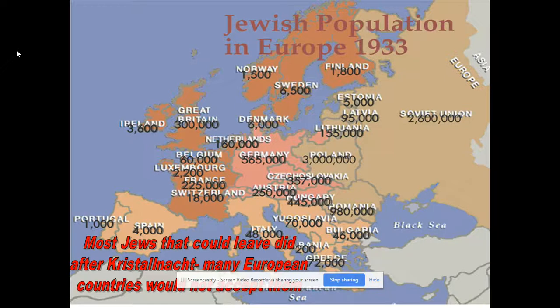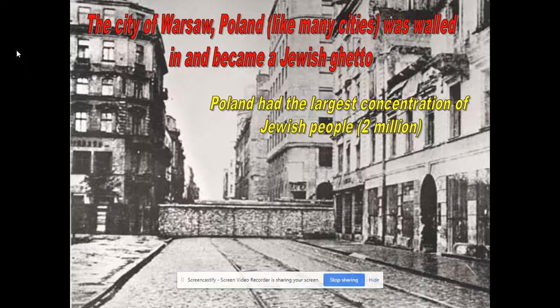Looking at the Jewish population in Europe around 1933, Eastern Europe was known for decades of religious persecution against Jewish people. That's why so many Jewish people migrated from Eastern and Southern Europe, particularly from Russia, Poland, and Ukraine, to the United States in the late 1800s and early 1900s. That's why you see large Jewish populations in New York and other Midwestern cities — many Russian Jewish Americans moved to the Dakotas to farm under the Homestead Act.